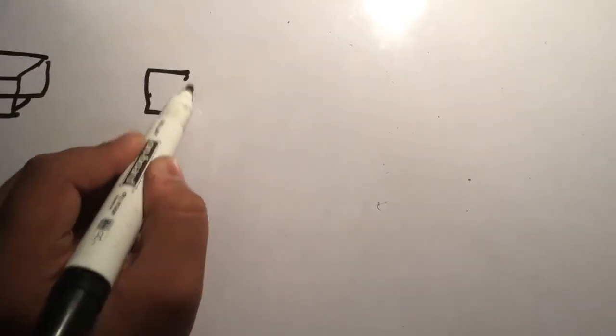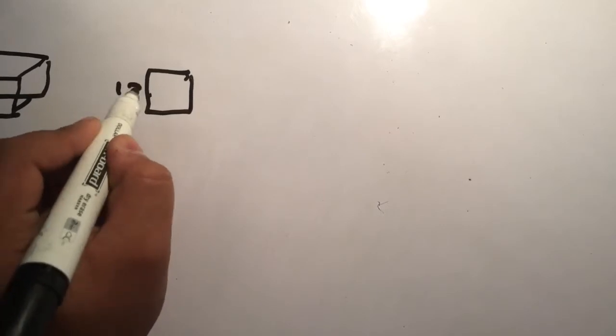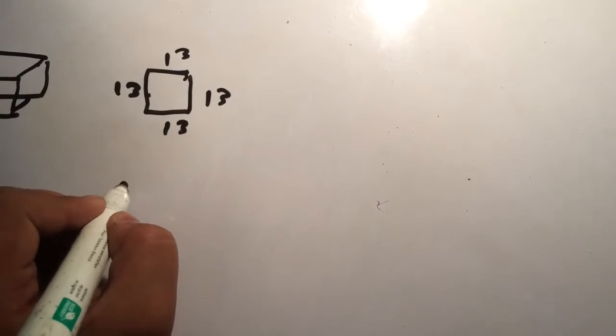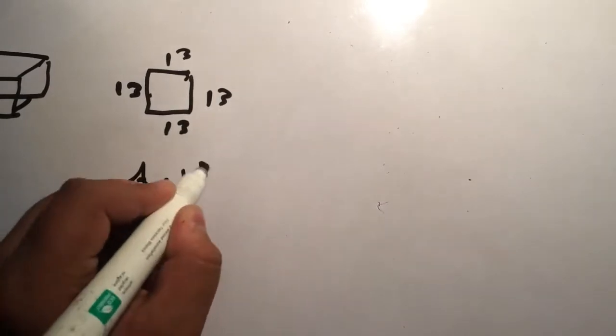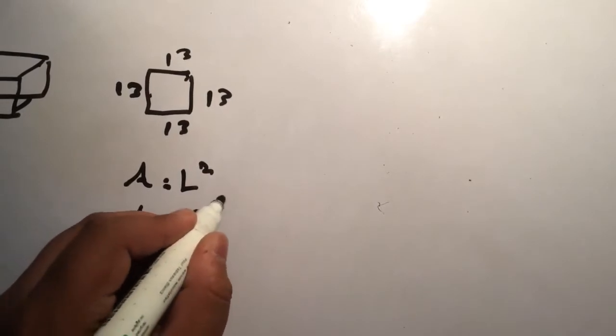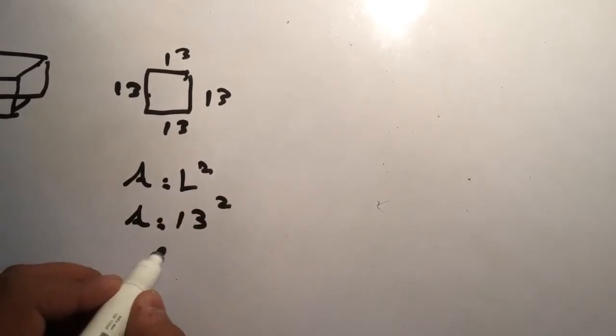So there is the volume of the whole cube. Then we have to find the area of one side. This is one side with 13 by 13. So the area will be: area equals to L square, area equals to 13 square, and the answer will be 169.